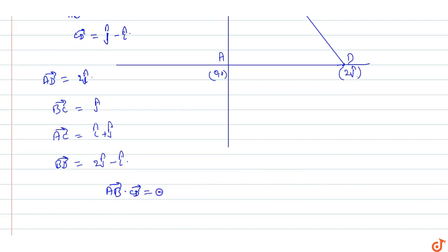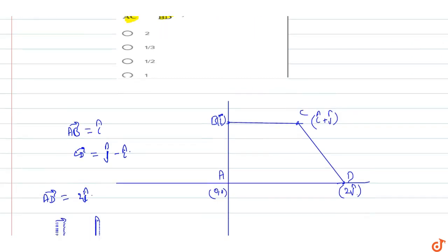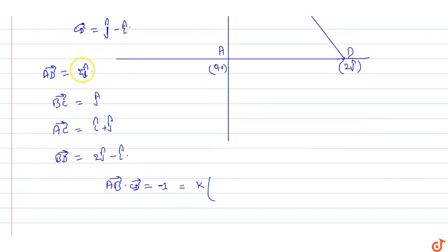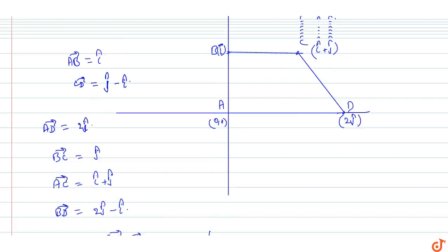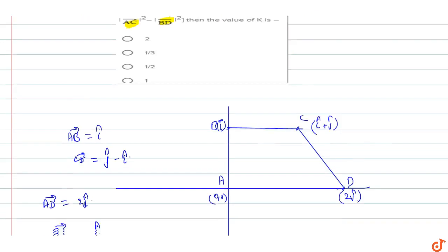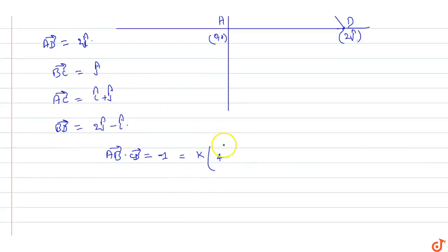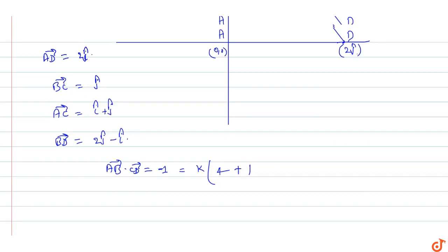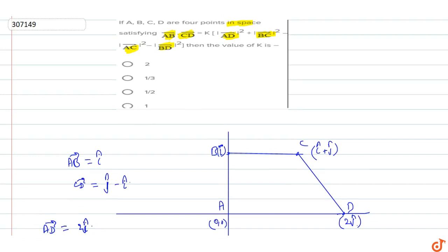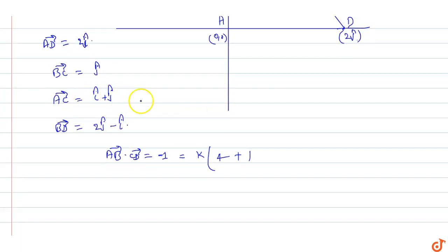The dot product AB dot CD equals minus 1, which equals k times mode of AD whole square. AD vector is equal to 4, plus BC vector. Mode of BC is equal to 2. Plus AC vector whole square.